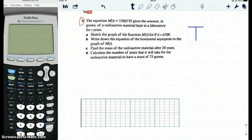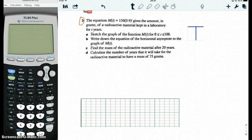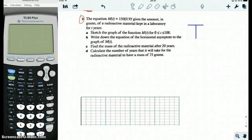Exponential Bookwork, page 5, number 3. The equation m(t) = 150(0.9)^t gives the amount in grams of a radioactive material kept in a laboratory for t years. Sketch the graph of the function m for 0 to 100 years. Write down the equation of the horizontal asymptote to the graph. Find the mass of the radioactive material after 20 years. Calculate the number of years it will take for the radioactive material to have a mass of 75 grams.